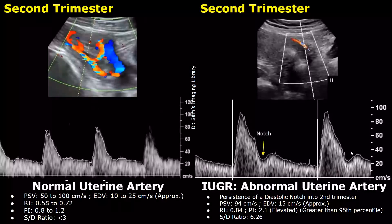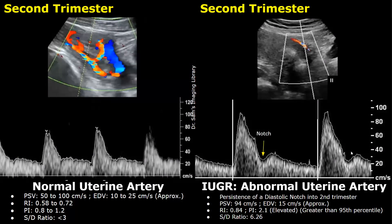Uterine artery Doppler findings can also indicate IUGR, especially in the second trimester. A notch seen during diastole in the uterine artery waveform in the second trimester can be a sign of IUGR — this groove should not be present and is not seen in a normal uterine artery. Another key parameter is pulsatility index; the normal PI is 0.8 to 1.2. In this abnormal uterine artery example, the PI was 2.1, which is elevated and greater than the 95th percentile.